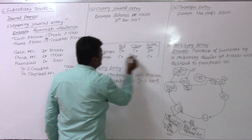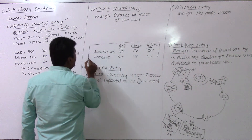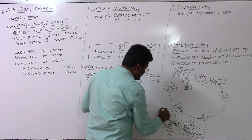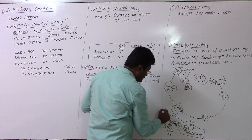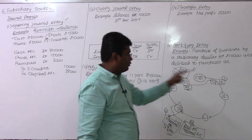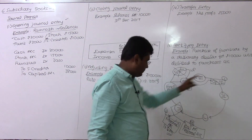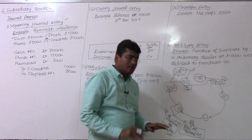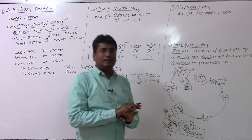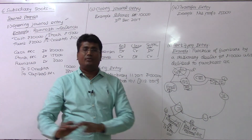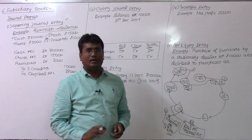This is part 2. In part 1 we saw the opening journal entry. In part 2, we close nominal accounts from the trial balance — real and personal accounts remain for the balance sheet.